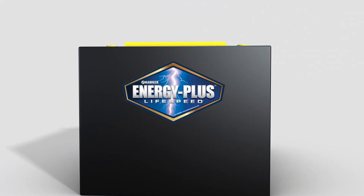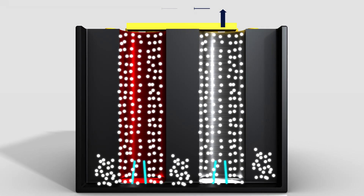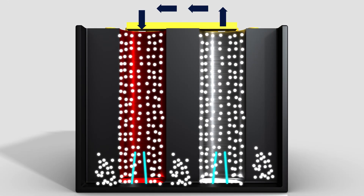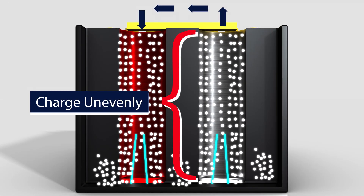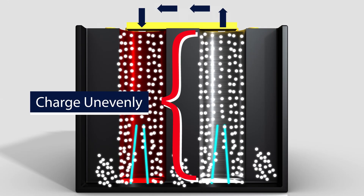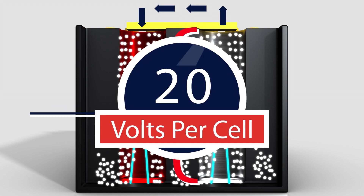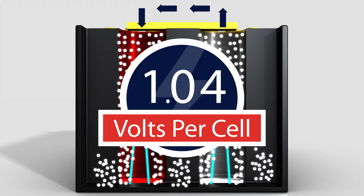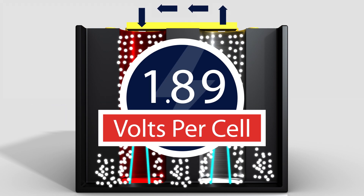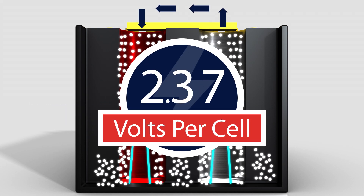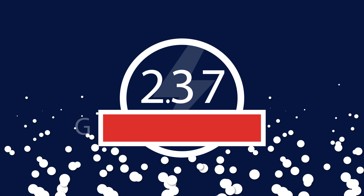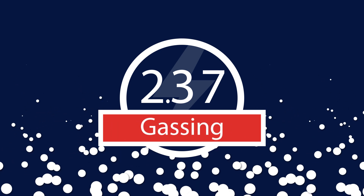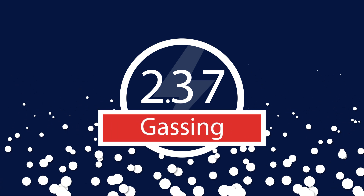As charge current is applied, the plates receiving it begin charging, but accept charge unevenly. This continues until reaching a voltage of 2.37 volts per cell. At this point, gassing occurs and begins mixing the acid.